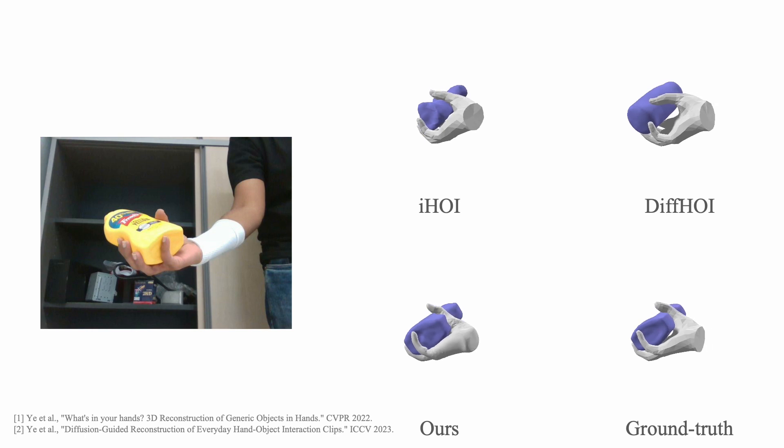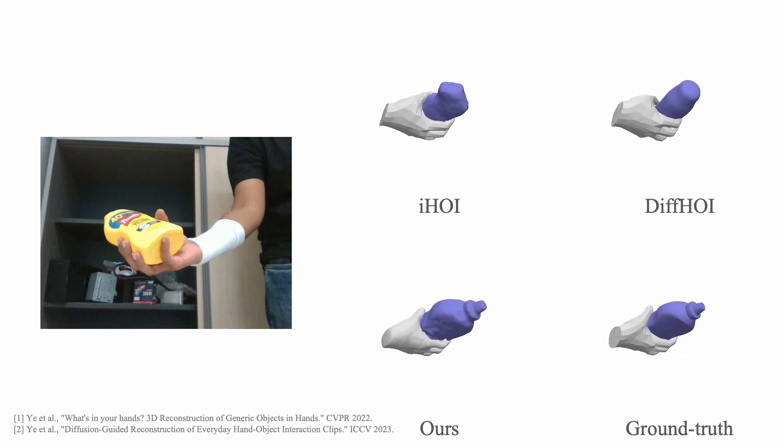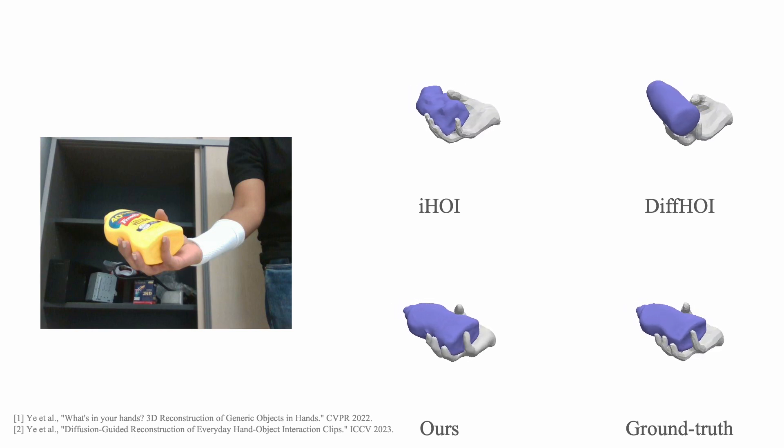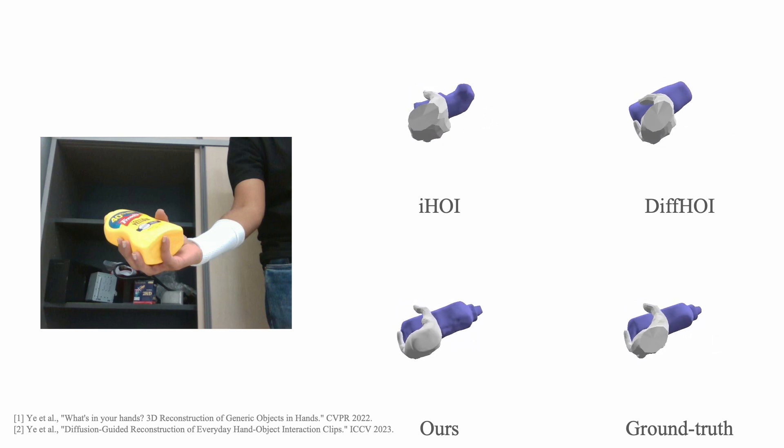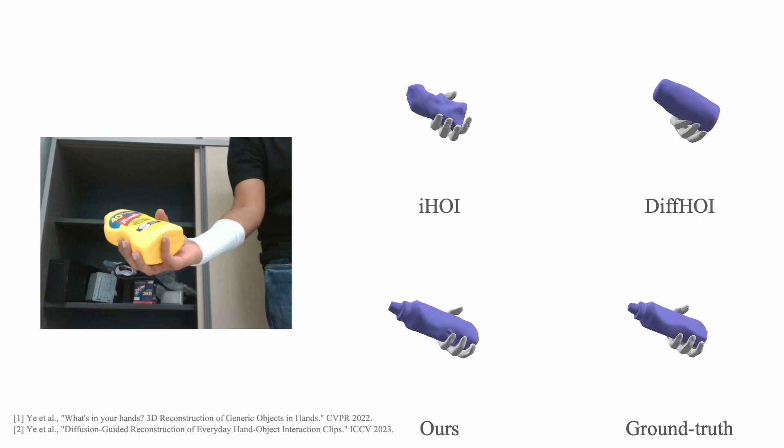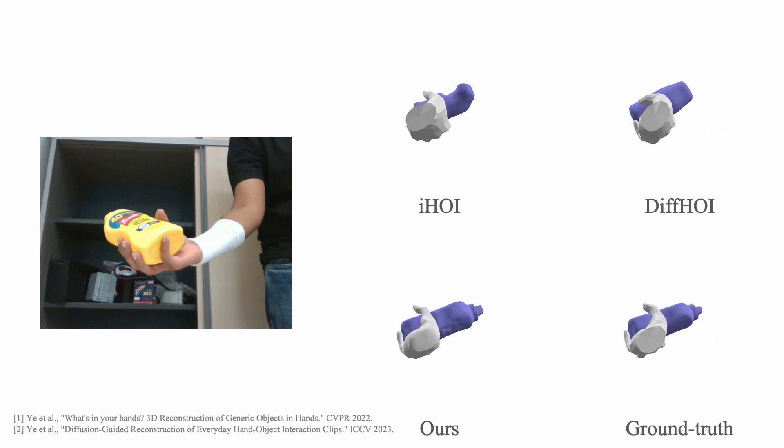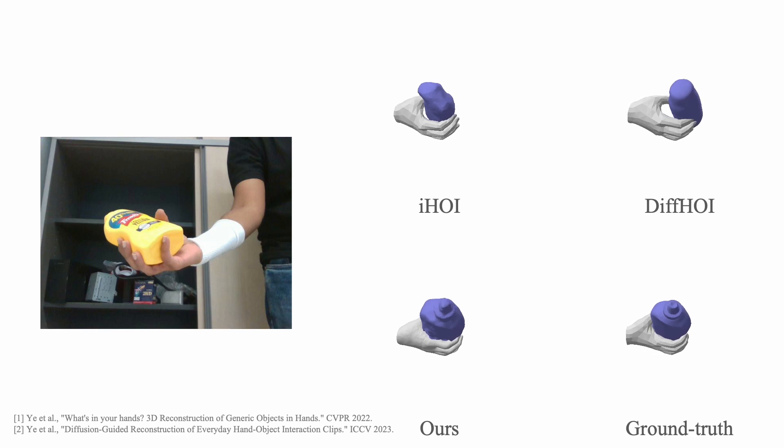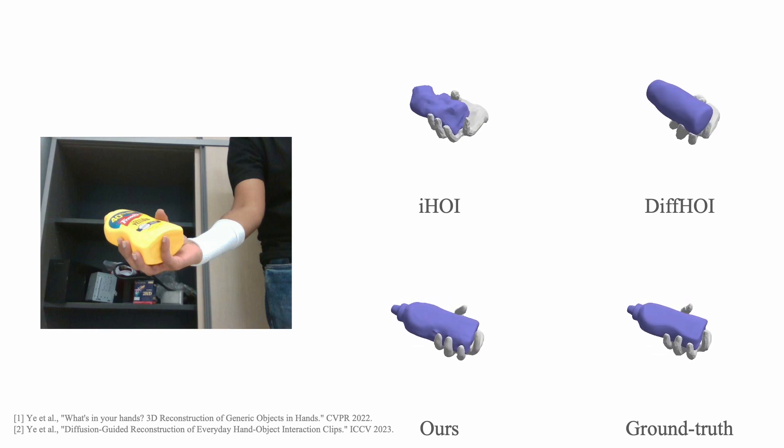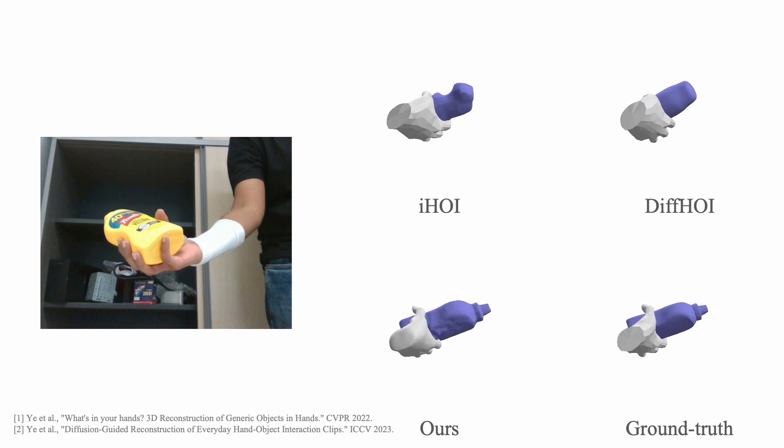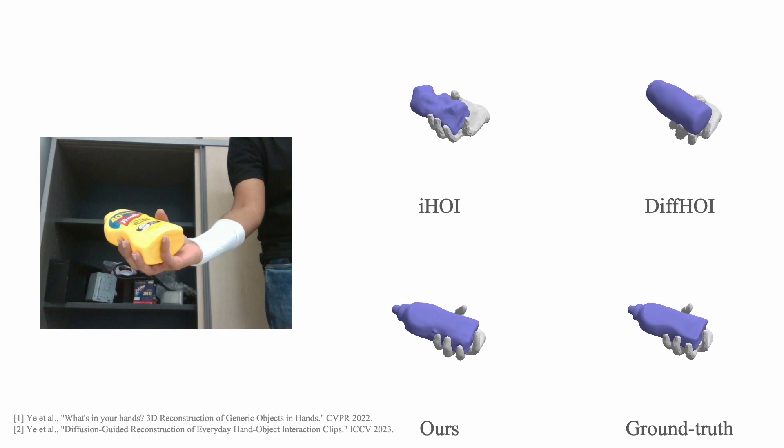Here we compare with two state-of-the-art methods in the HO3D dataset. IHOI is a method that is trained with the 3D template of the bottle in this sequence. DIF HOI relies on category-level supervision by training on different bottles, yet it reconstructs a generic bottle from its data-driven prior. Our method does not rely on any 3D hand object data to train. Although it doesn't use any 3D hand object supervision, our method reconstructs more fine-grained details than the other methods. For example, notice the cap of the bottle, the reconstructed shape is closer to the ground truth shape.